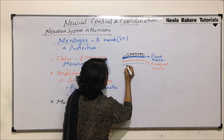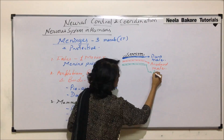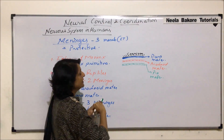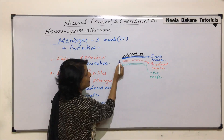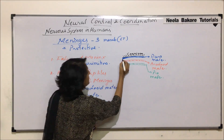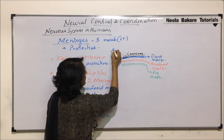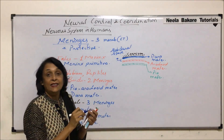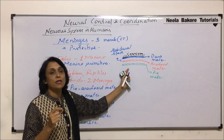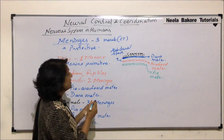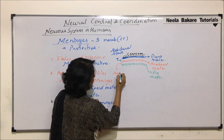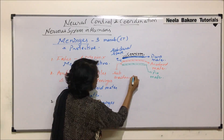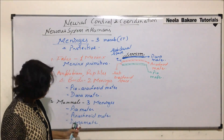The innermost layer is pia matter, which is just attached or very close to the central nervous system. There are two distinct spaces visible: one space between dura matter and arachnoid matter, known as the subdural space, and below arachnoid matter — between arachnoid and pia matter — is the subarachnoid space.